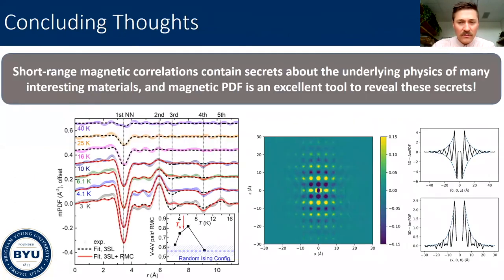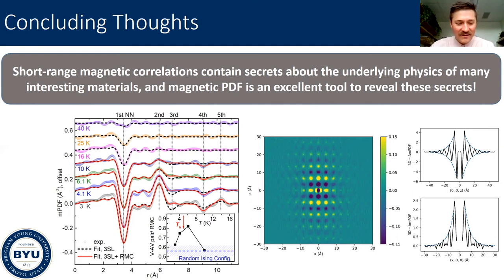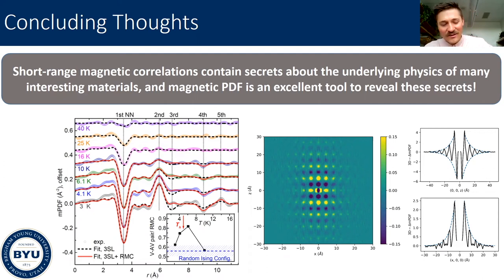In conclusion, I hope I've demonstrated that short-range magnetic correlations in materials have a lot of interesting information — a lot of secrets just waiting to tell us about the underlying physics and properties of interesting materials. There are different ways to get at those secrets, but magnetic PDF is one promising way to probe short-range magnetic correlations and get deeper insights into the physics of interesting magnetic materials through real-space analysis. Thank you very much for your attention, and I'm happy to answer any other questions.